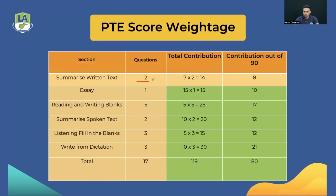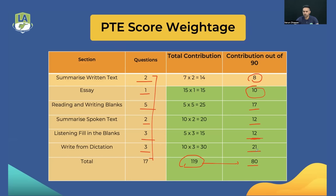For writing, the question types are: one Summarize Written Text, one Essay, five Reading-Writing Blanks, two Summarize Spoken Text, three Listening Fill in the Blanks, and three Write From Dictation — this is an average and can vary. Total contribution is 119 raw points. Converting out of 80: Summarize Written Text contributes about 8 points, Essay about 10 points, Reading-Writing Blanks 17–18 points, Summarize Spoken Text 10–12 points, Listening Fill in the Blanks 11–12 points, and Write From Dictation 21–22 points.